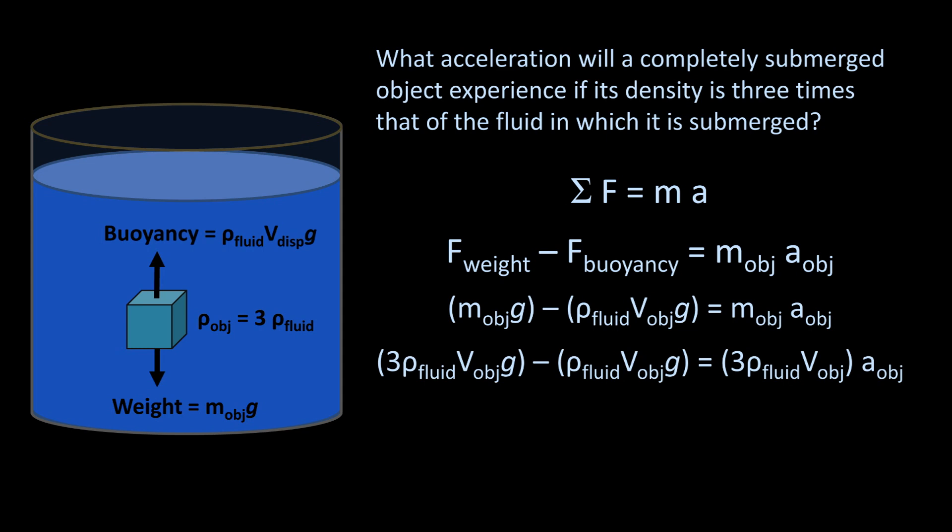The density of the fluid is present in every term, so it cancels out. And the volume of the object also cancels out. This leaves us with 3g minus g equals three times the acceleration of the object. Solving for a, we find that it's two-thirds g.